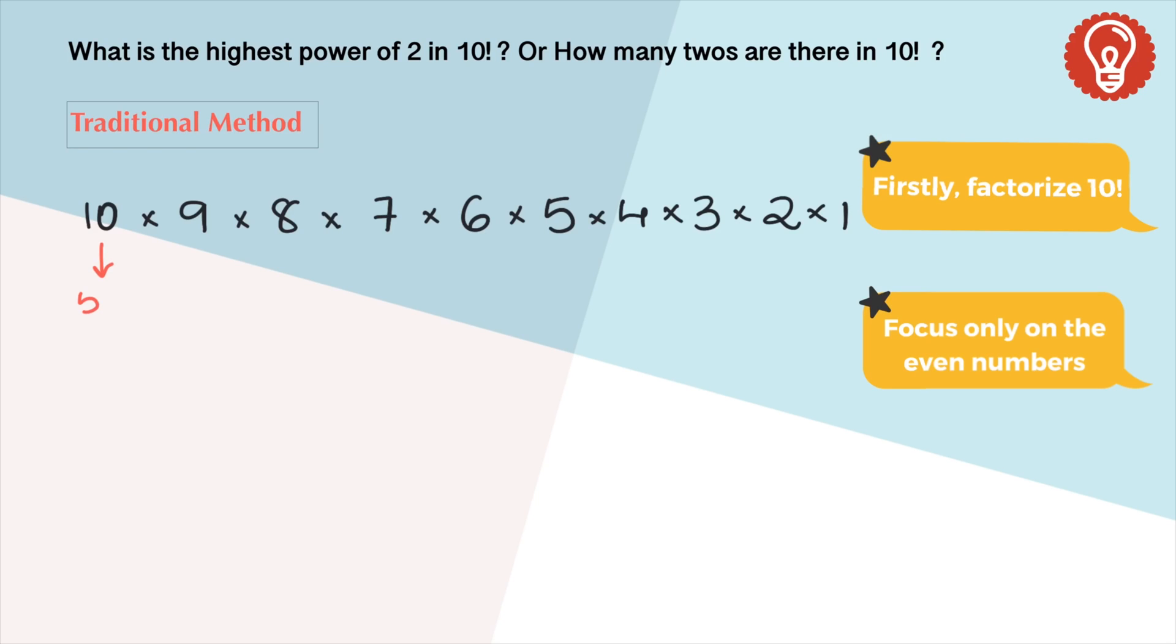Where 10 can be written as 5 × 2, 8 is 2³, 6 is 2 × 3, 4 is 2², and 2 is 2¹. Now let's count the number of 2's.